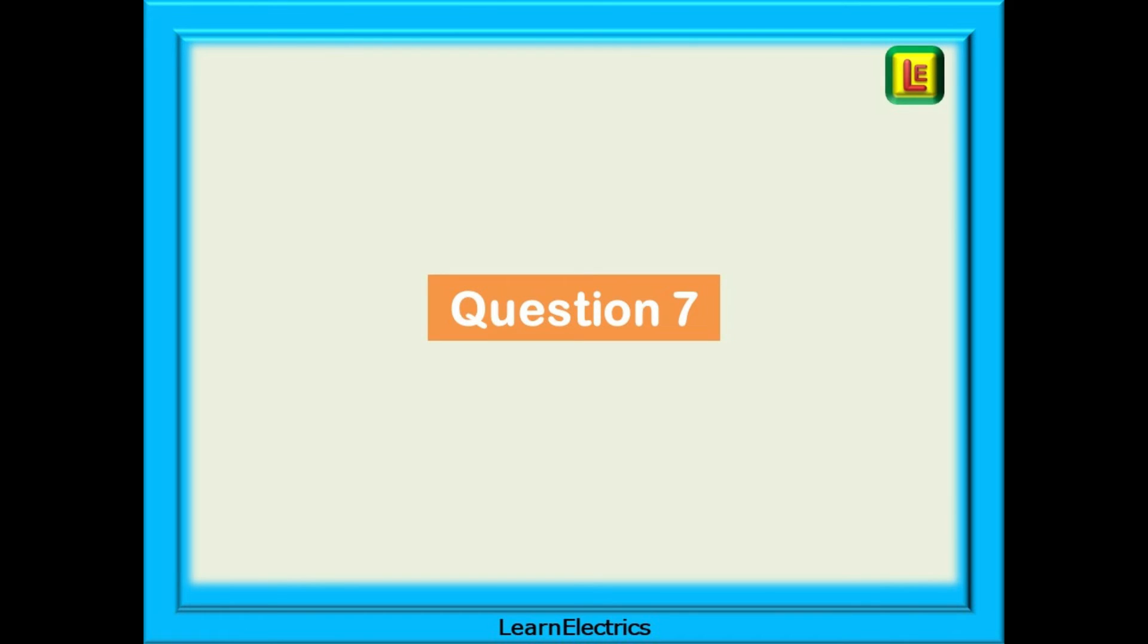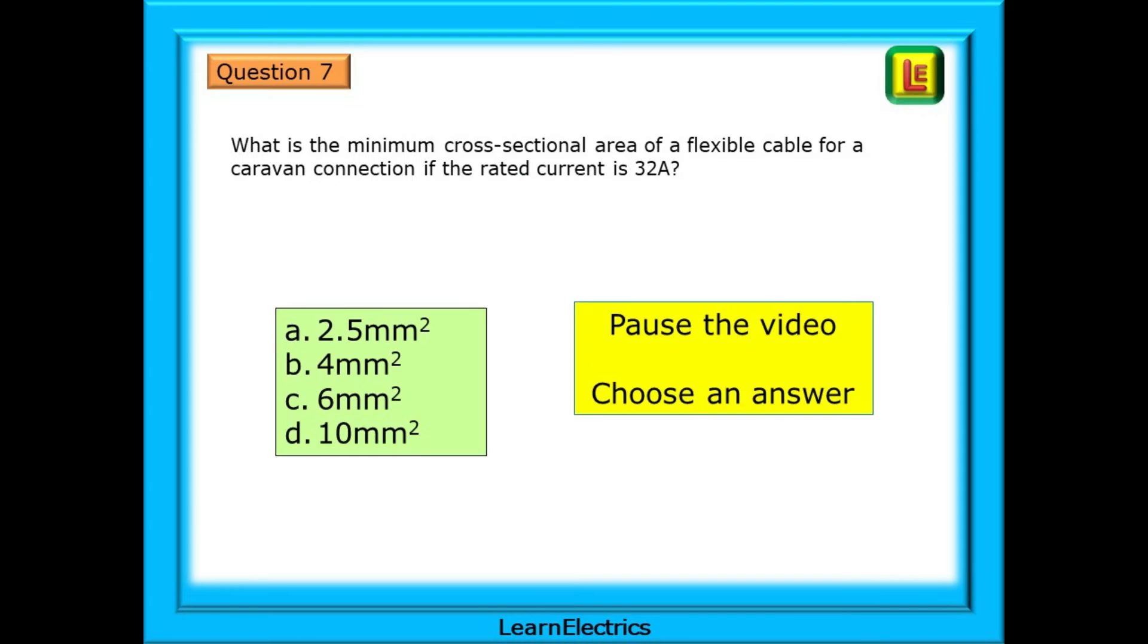And now for question 7. What is the minimum cross-sectional area of a flexible cable for a caravan connection if the rated current is 32 amps? Pause the video, find the table, and choose an answer.